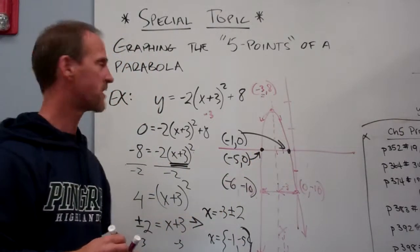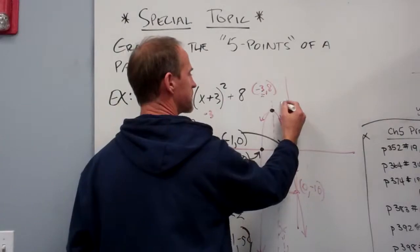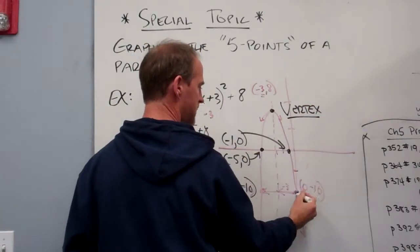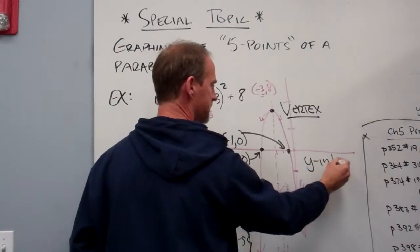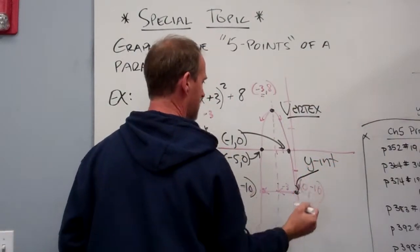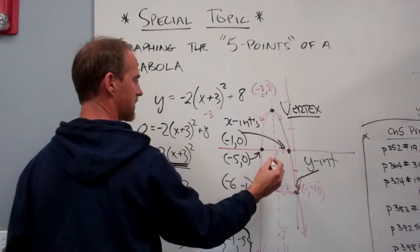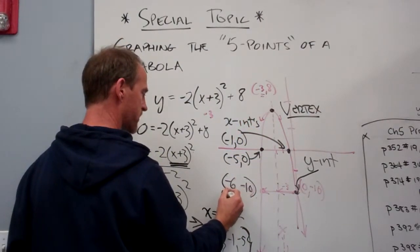So the five points of our parabola are the vertex, this one here is the y-intercept, we've got the two x-intercepts right there and right there, and then this is called the symmetric point.